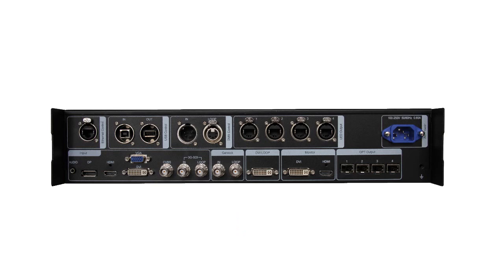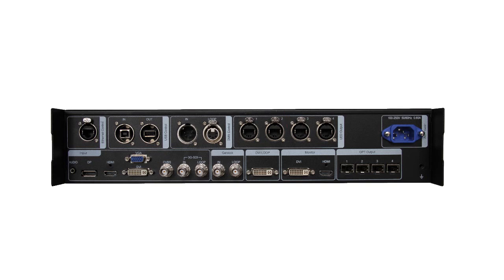Please note that loop means the signal directly goes out from the controller to another device without processing. The third part is the output interface. These four outputs are for sending the video signals to the LED display. And this is the fiber optical outputs. If the distance between Nova Pro HD and the screen is more than 100 meters, we need to use this fiber to send signals.